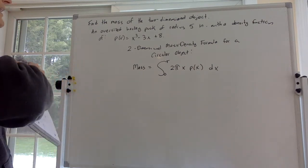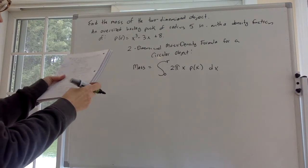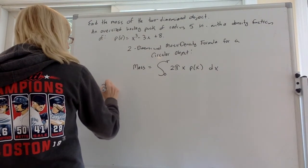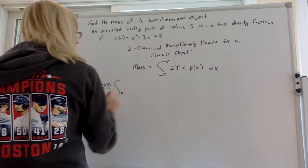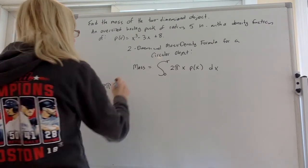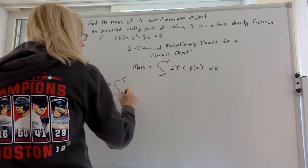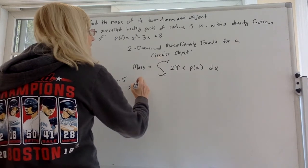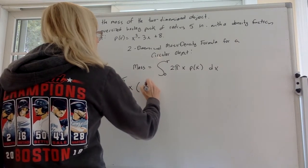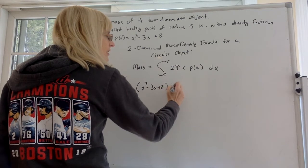So what do we got to do? We got to start plugging in. The first thing I'm going to do is move the 2 pi out front. What's the radius of our hockey puck? It's 5 inches. x stays x, p of x is x cubed minus 3x plus 8 dx.